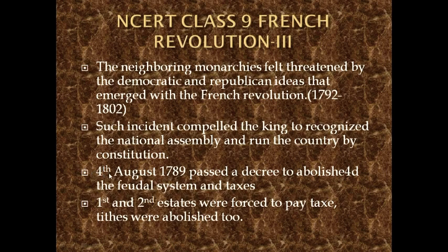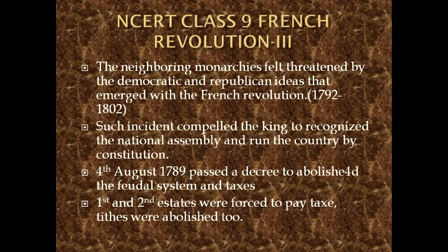On 4th August 1789, the decree also forced the first and second states to pay tax for the first time, and tithes were abolished too. Please refer to my previous video for definitions of tithes and livres. So both the feudal system and taxes on commoners were abolished, while the privileged first and second states were now bound to pay tax because of this revolution.